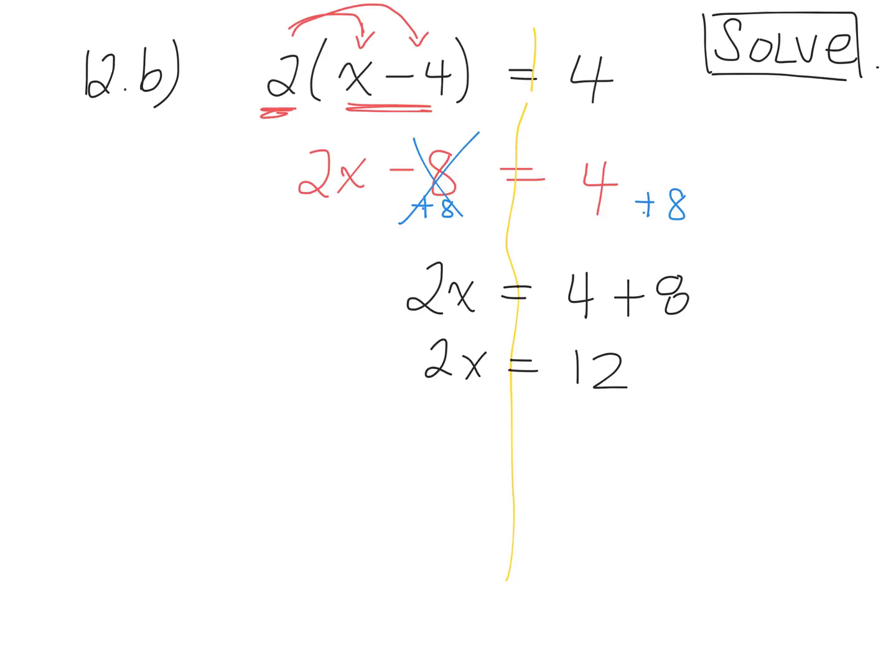The final step, whenever we have a number and a variable, that's multiplication. Opposite of 2 multiplied by something? Divide it by 2. What do I do to the right side? x equals? Good.